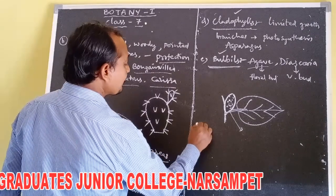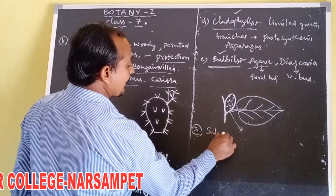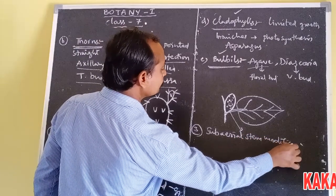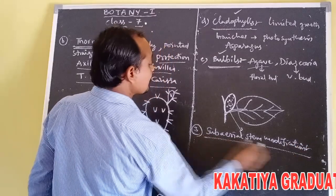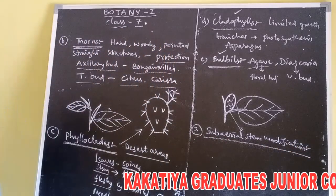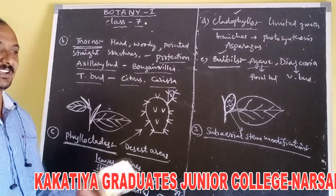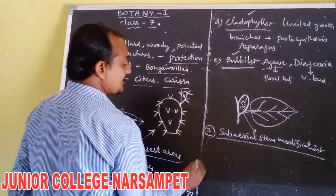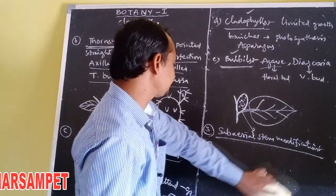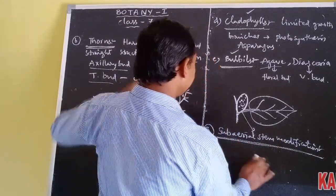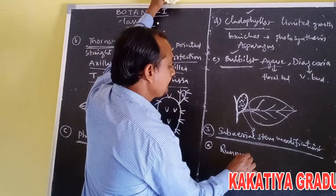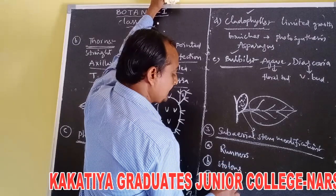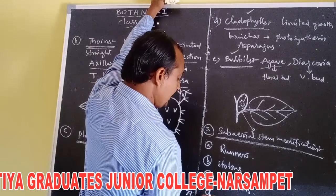The third type of stem modifications are sub-aerial stem modifications. Half of the stem is present below the soil and half above the soil — such types of stems are called sub-aerial stems. The sub-aerial stems are four types: runners, stolons, suckers, and offsets.